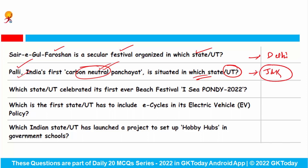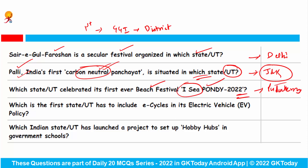Jammu and Kashmir is the very first union territory of India to implement the good governance index at district level. Which state or union territory celebrated its first ever beach festival IC Pondi 2022? This is Puducherry — P for Pondi and P for Puducherry. Which is the first state or union territory to include e-cycles in its electric vehicle policy? This is New Delhi.